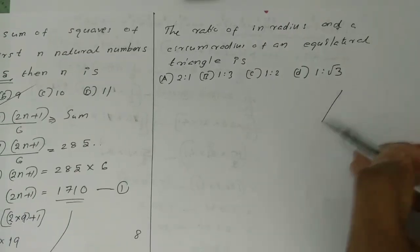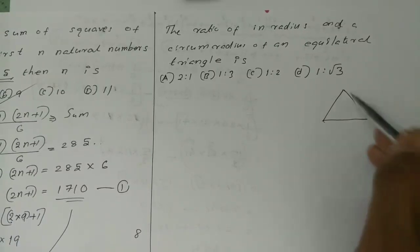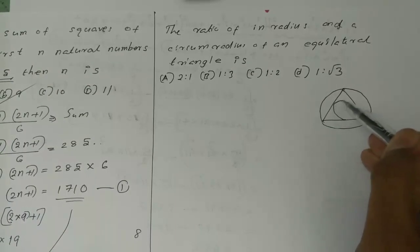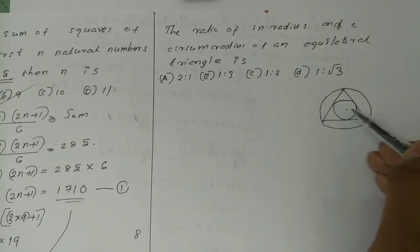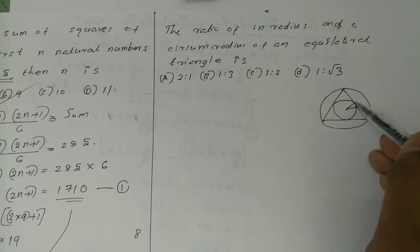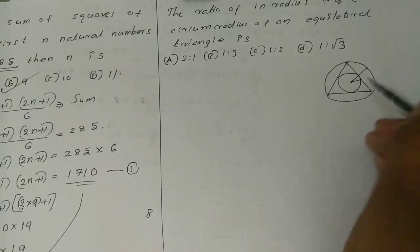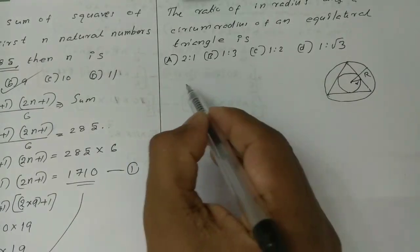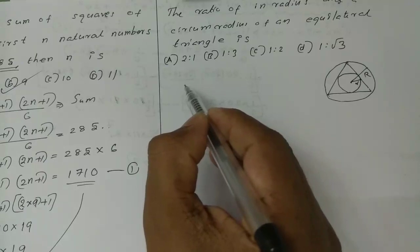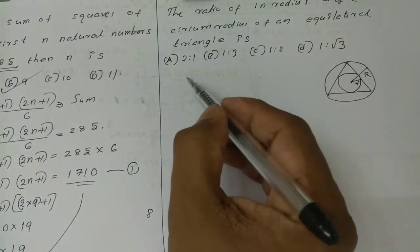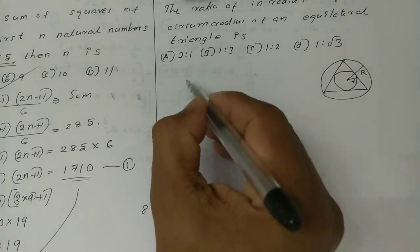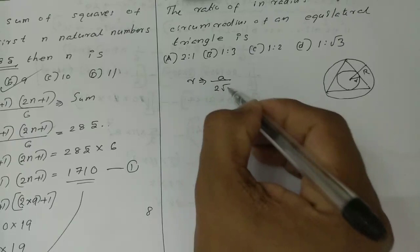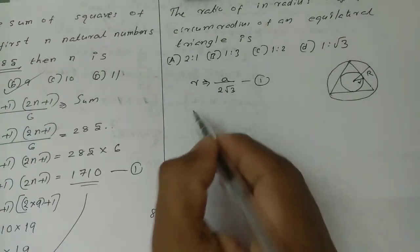For an equilateral triangle, we need the ratio of the inradius (r) and circumradius (R). We will use the geometry of the triangle. The inradius r equals A divided by 2√3.